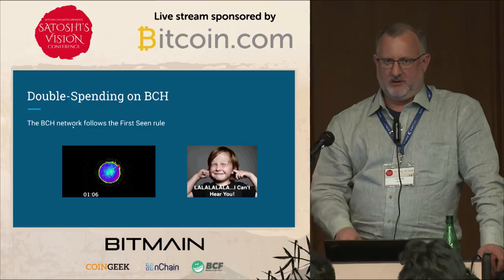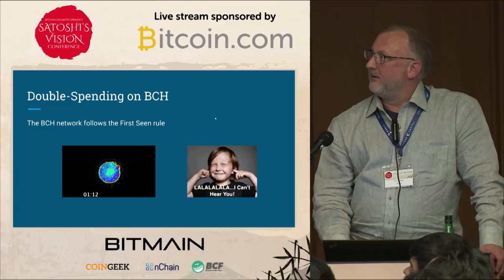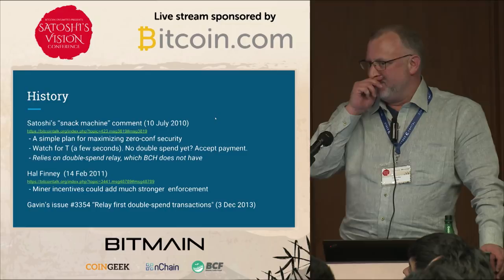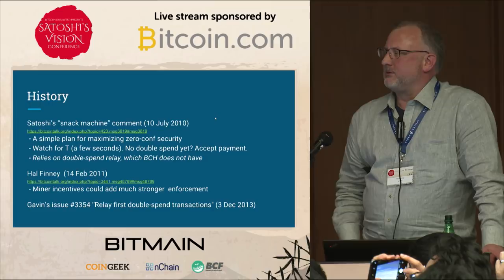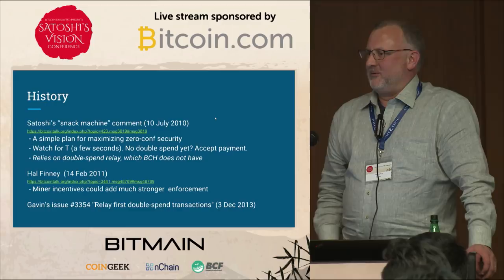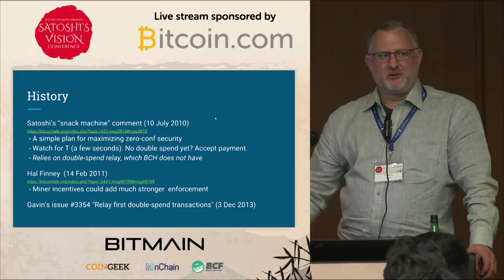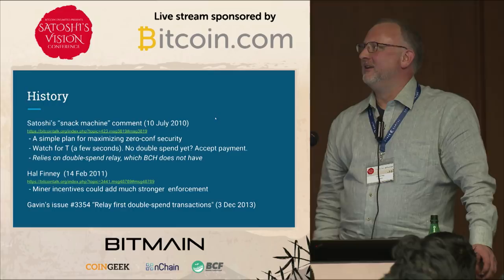What happens if two spends are released into the network at exactly the same time? That's something to worry about. A bit of history: Satoshi did address this as something we might want to think about in the future. He had a simple answer and a simple plan for maximizing zero-conf security — not making it as secure as confirmed transactions, but maximizing it. For many years we weren't allowed to ask how to maximize zero-conf security because we were told it'll never be as secure, so we should break it completely. But now we're free to ask this question.